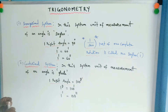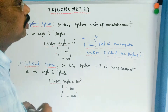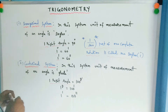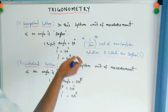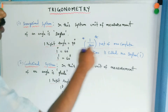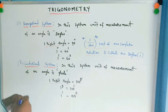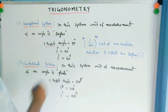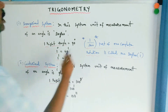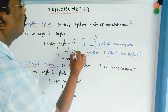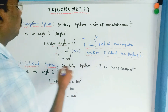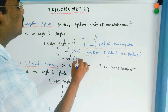First, the sexagesimal system. In this system, the unit of measurement of an angle is degree. One three-hundred-and-sixtieth part of one complete rotation is called one degree. One right angle equals 90 degrees, one degree equals 60 minutes, and one minute equals 60 seconds.